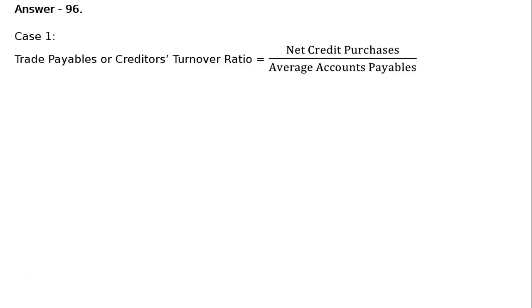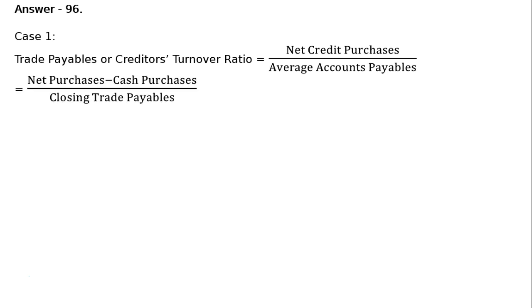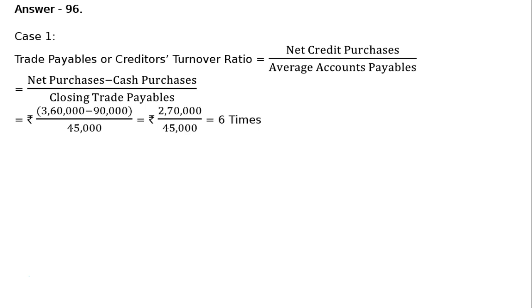Answer 96, Case 1. Trade payables or creditors turnover ratio is equal to net credit purchases upon average accounts payable. That is equal to net purchases minus cash purchases. Here in this question we have been given only one item of closing trade payables Rs. 45,000. This will not be averaged because only one part is given. That is Rs. 3,60,000 minus 90,000, whole divided by 45,000. That is equal to Rs. 2,70,000 upon 45,000, which is equal to 6 times.